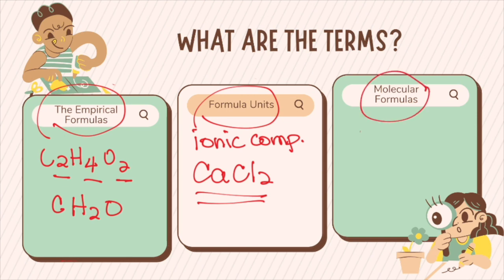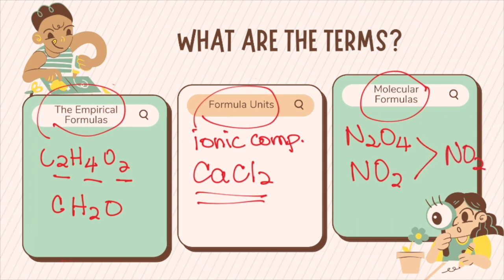Now let's proceed to molecular formulas. Molecular formulas show how many atoms of each element are in the molecules. You can clearly see the difference between compounds based on their molecular formulas, even if they have the same empirical formula. For example, dinitrogen tetroxide (N2O4) and nitrogen dioxide (NO2) will share the same empirical formula, which is NO2.